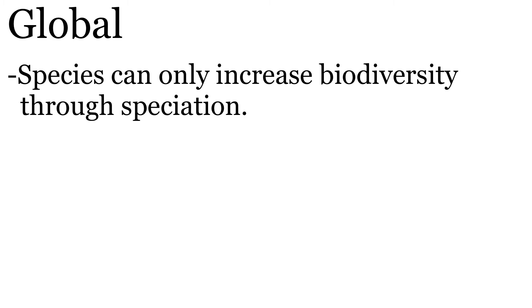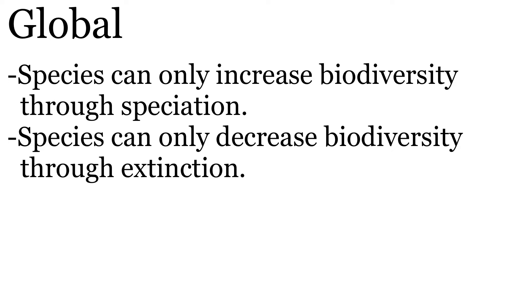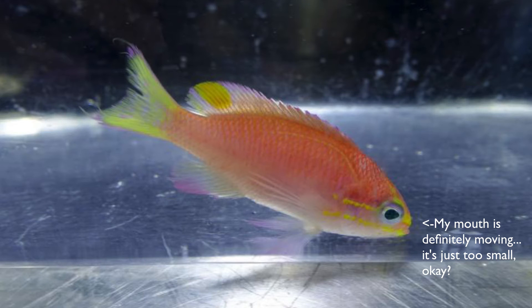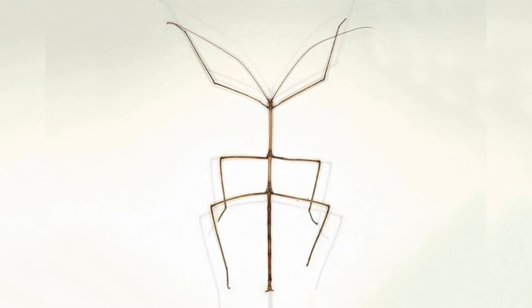At a global level, species can only increase biodiversity through speciation and can only decrease biodiversity through extinction. For example, Obama fish are a species that have been recently discovered. With their new existence in this world, they have increased biodiversity globally. Ridley's stick insects are also believed to have become extinct.